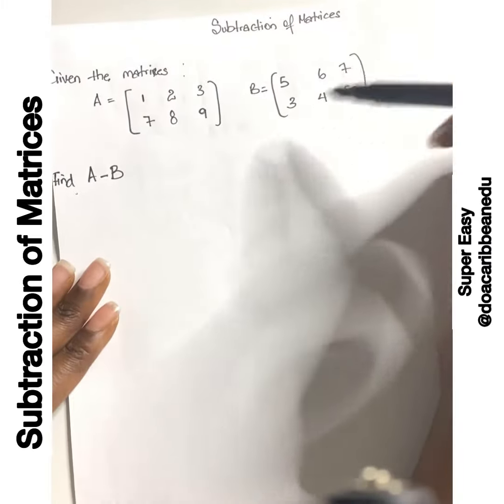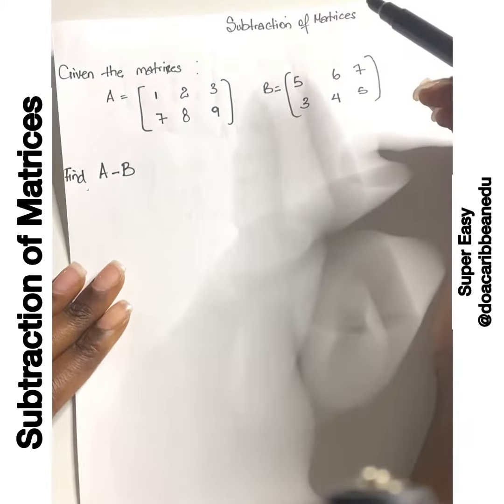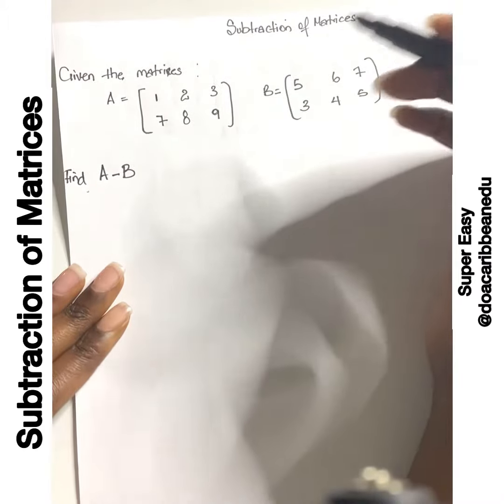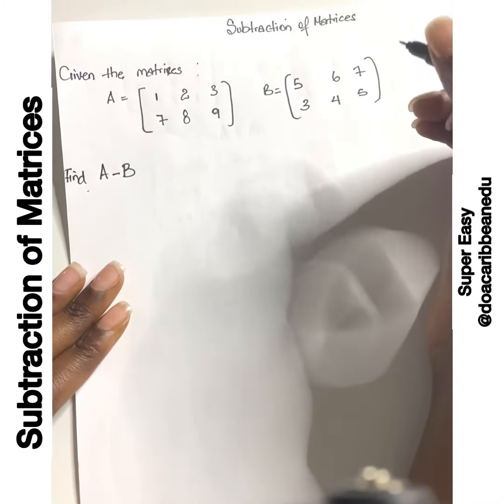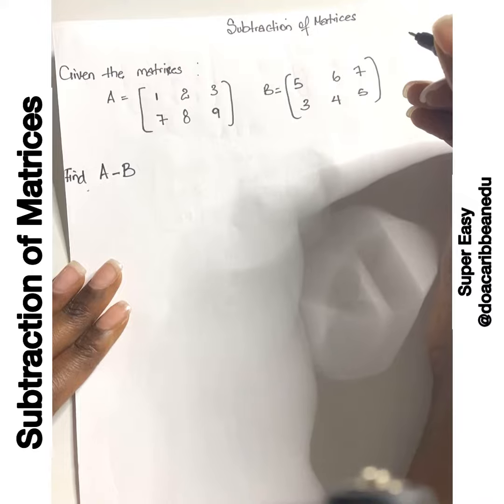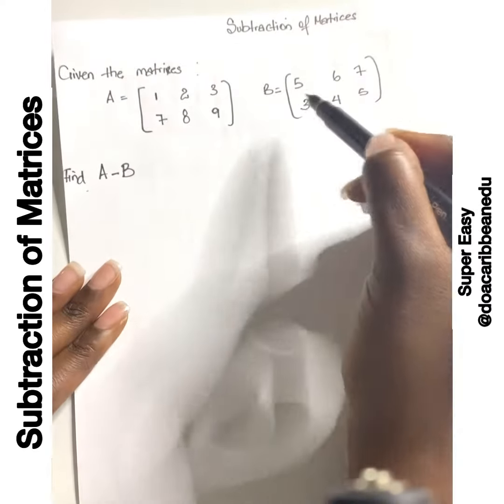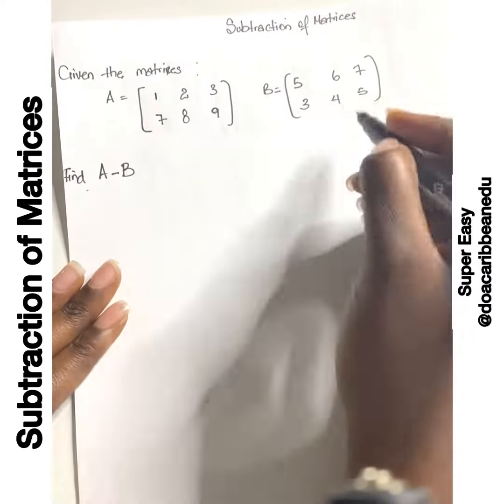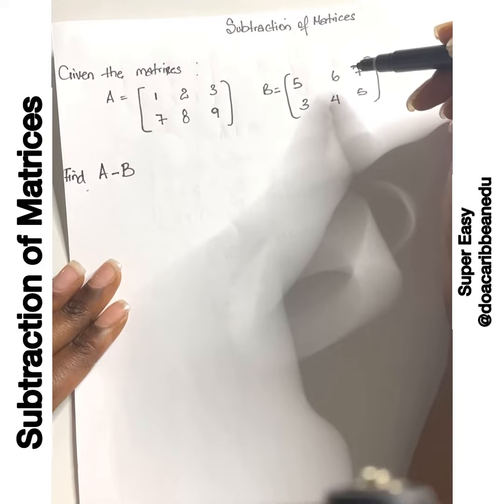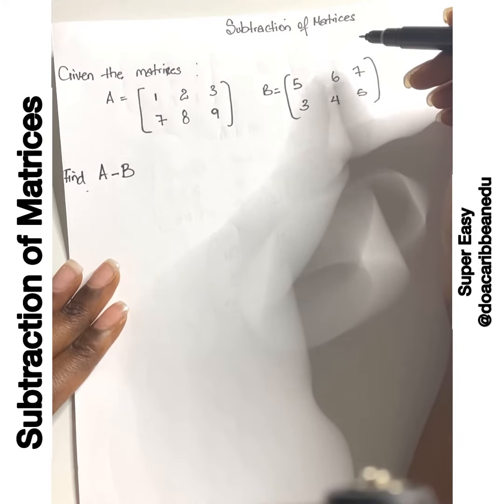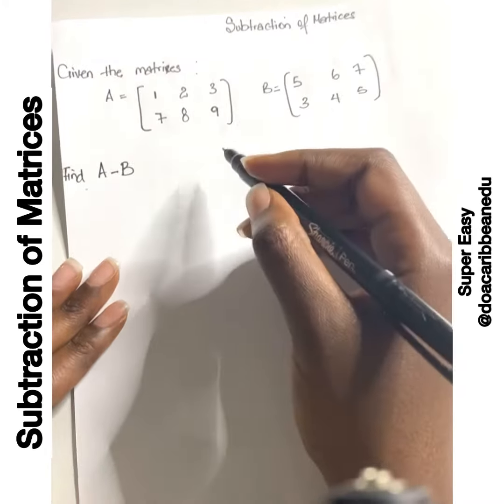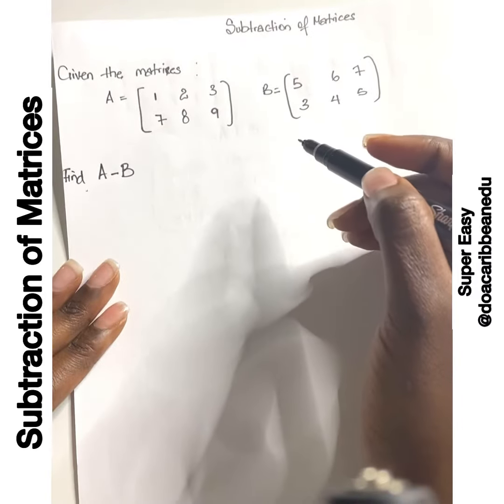Let me refresh your memory with the subtraction of matrices. We can only subtract two matrices if they have the same dimension. So A and B have the same dimension or the same order. And remember, just like what we did in addition, we're subtracting the corresponding elements. Simple.